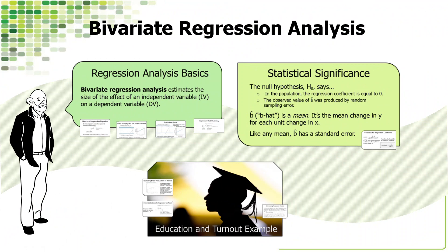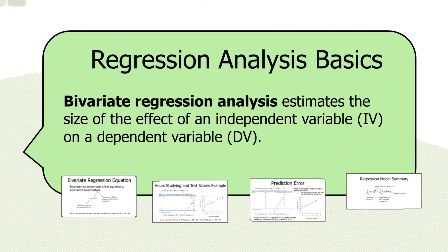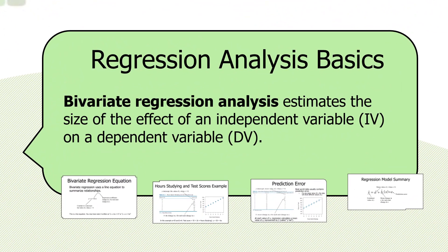In this module, I would like to discuss bivariate regressions, the basic model and its properties. Bivariate regression uses a line to summarize relationships.